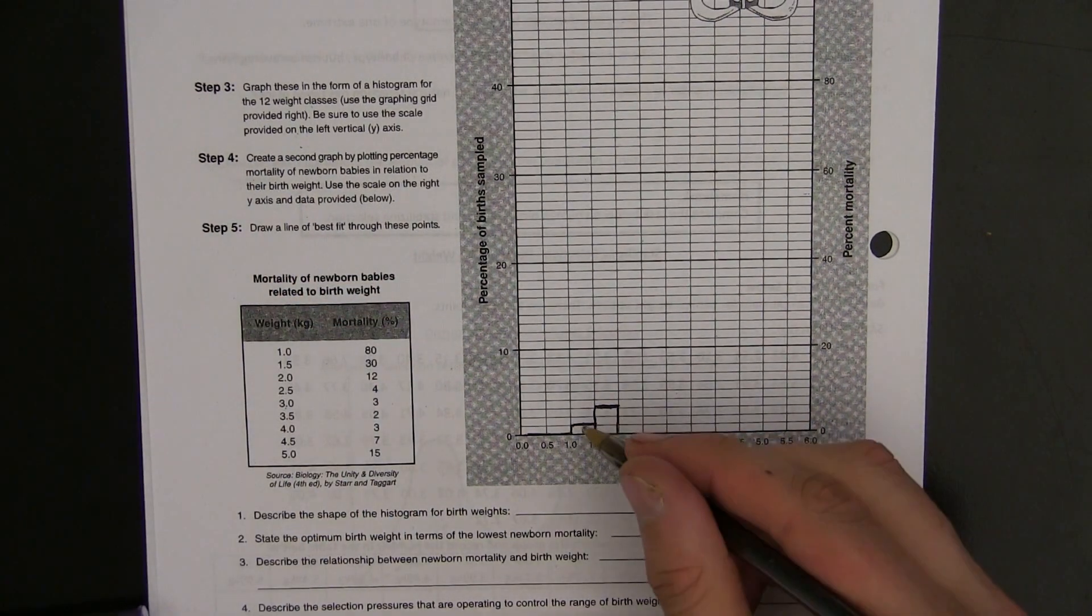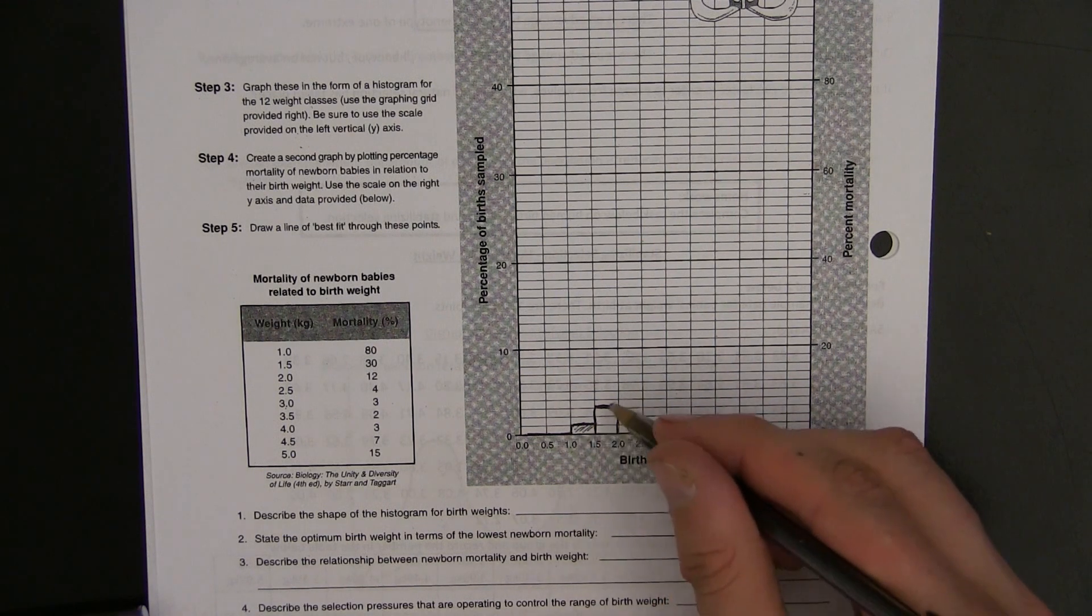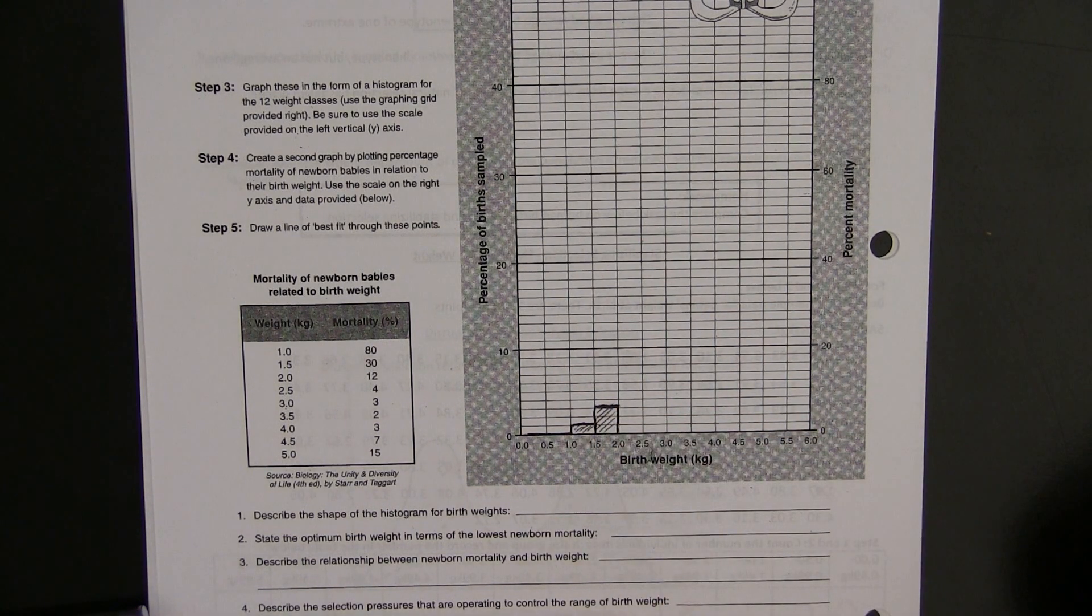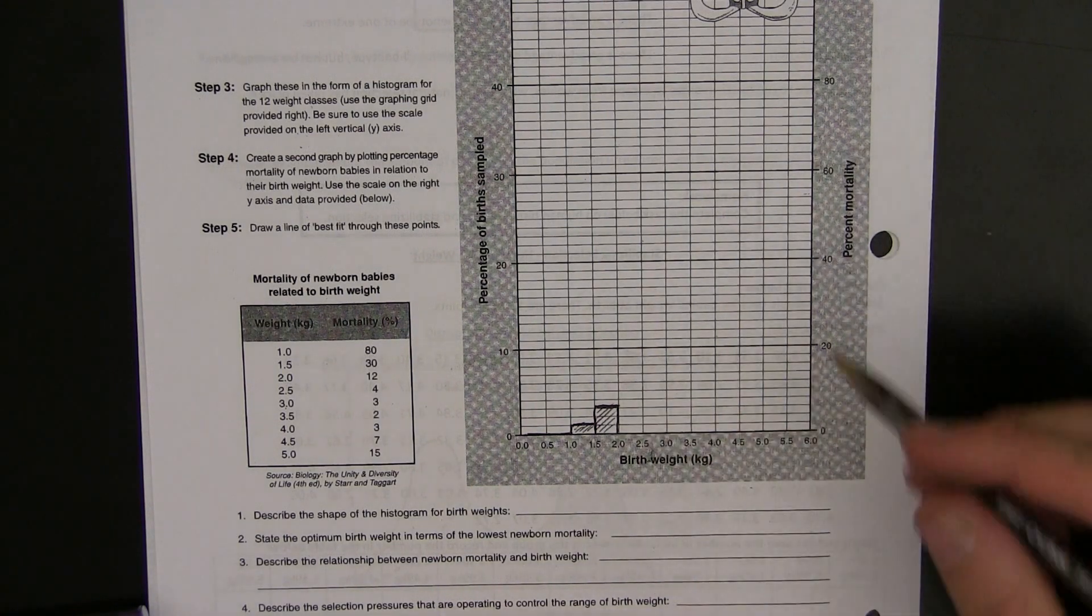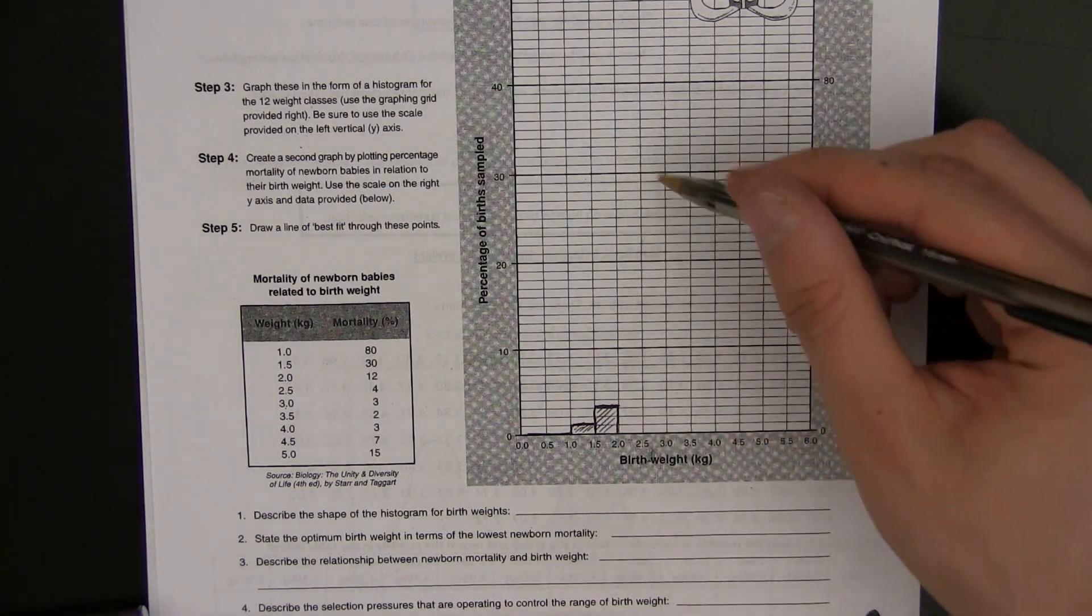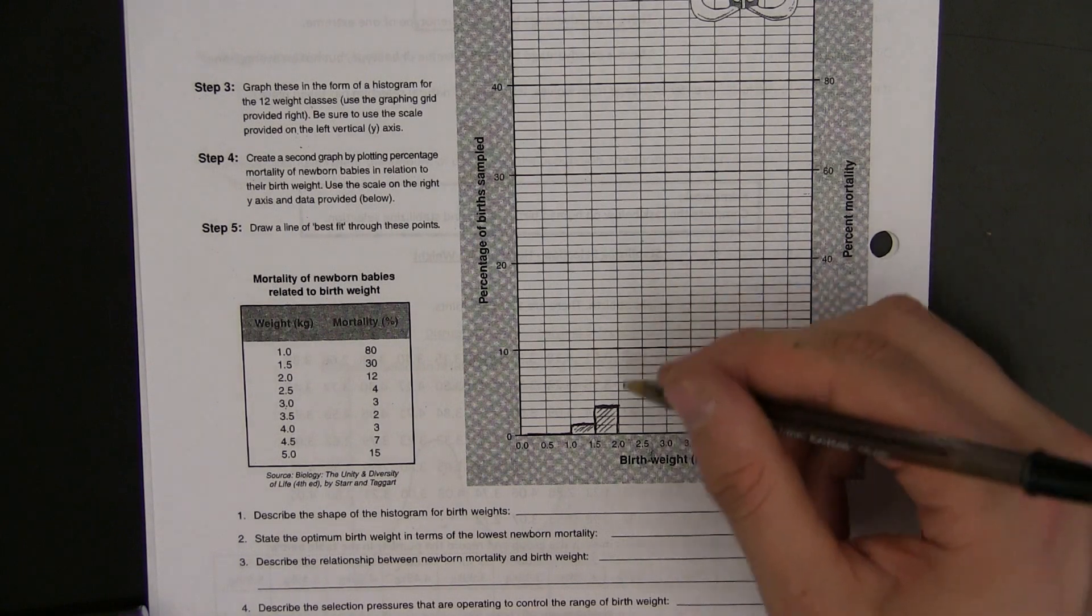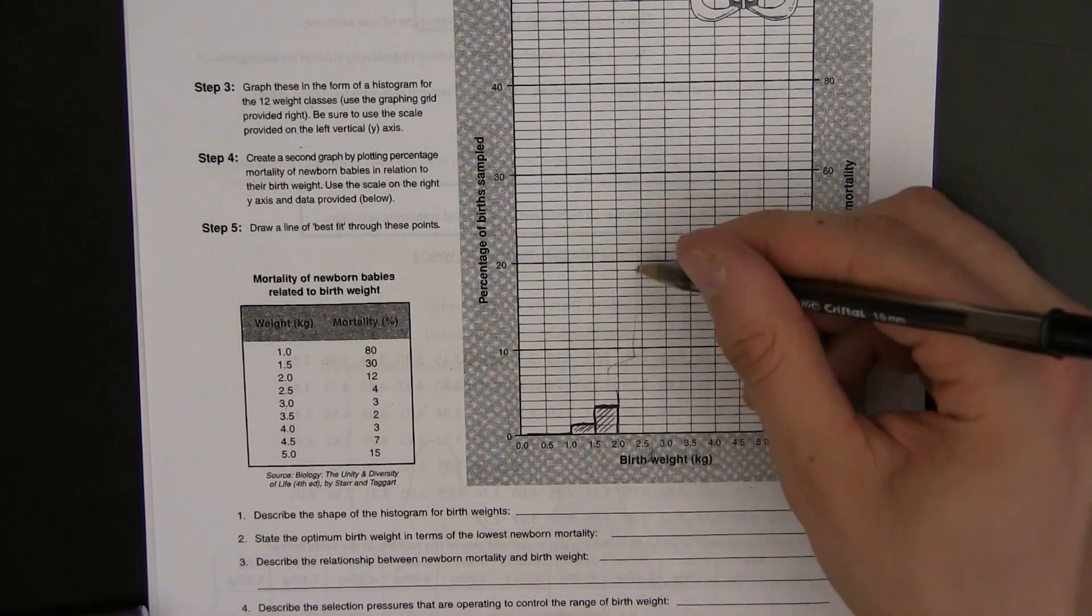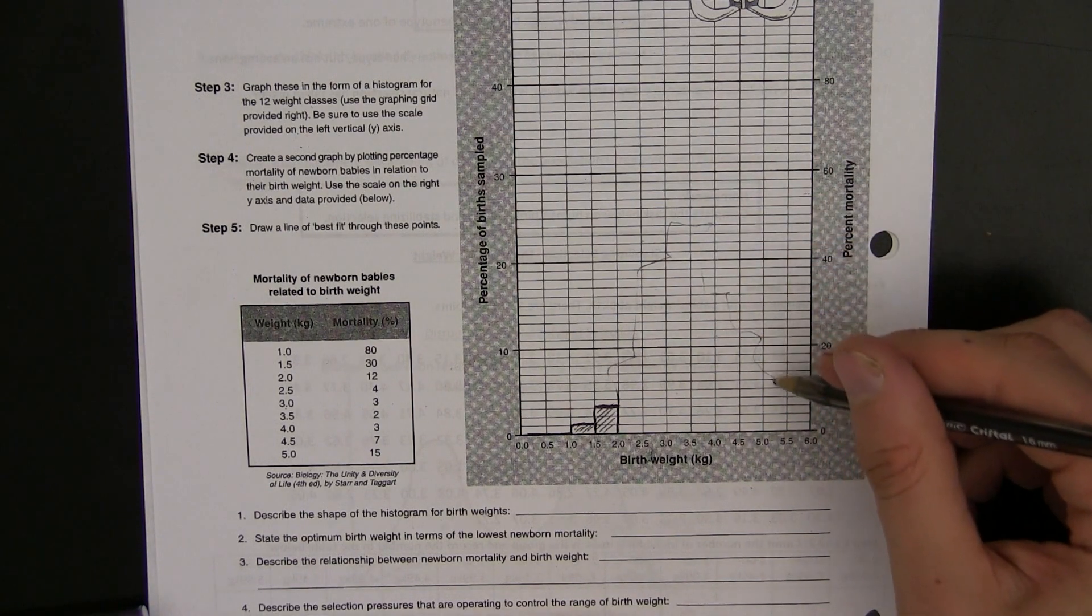So you're going to keep doing that for every weight category. And maybe I'll put in some light shading here to show where these bar charts are. Once you've finished this, you're going to get a whole set of data where you'll see some kind of shape that looks a little like this.